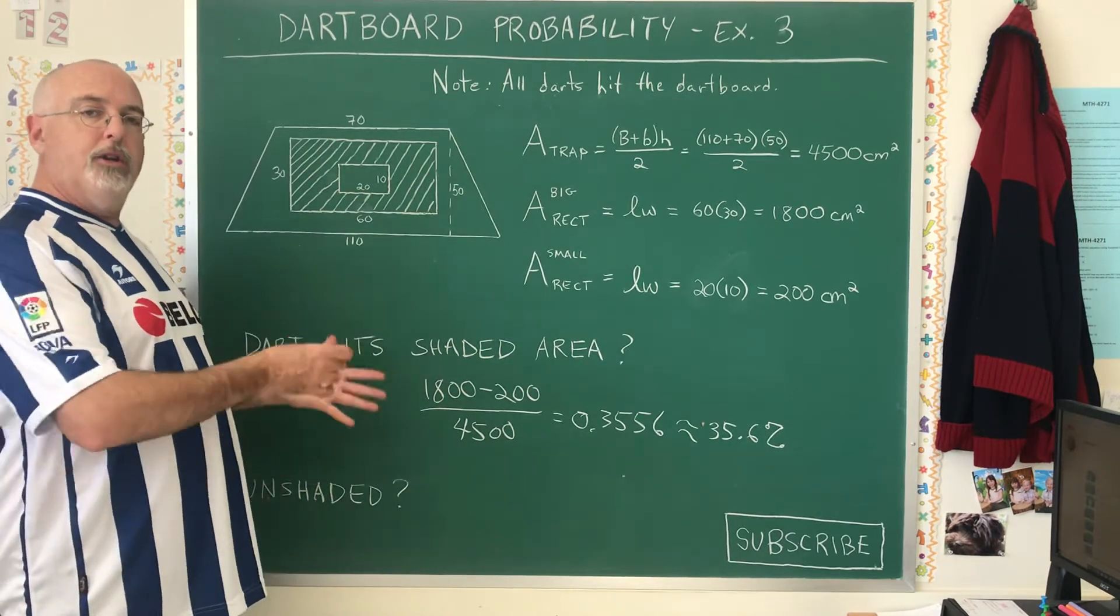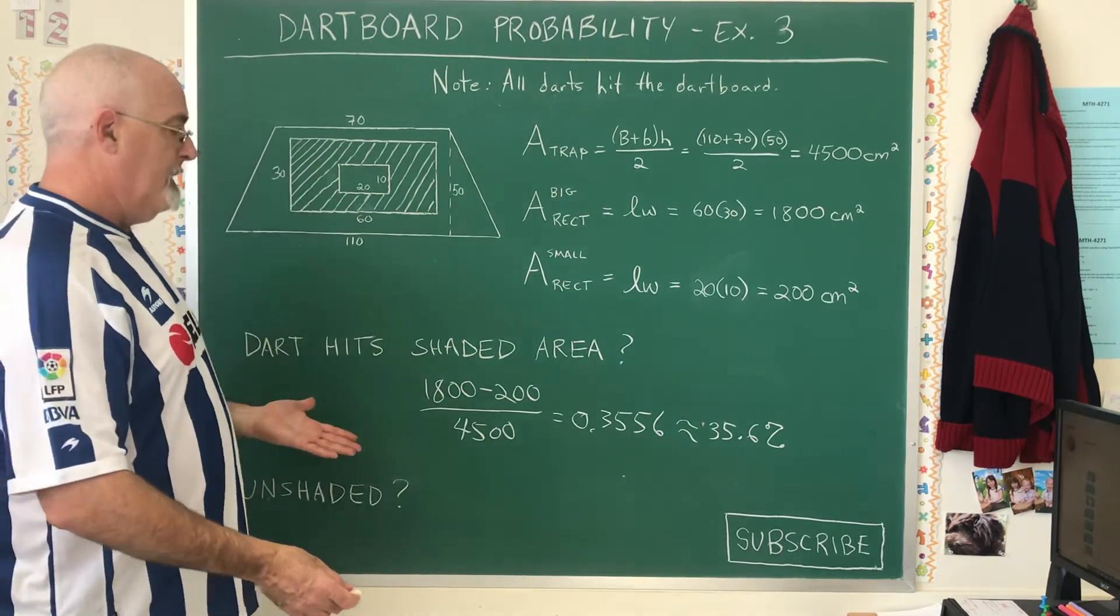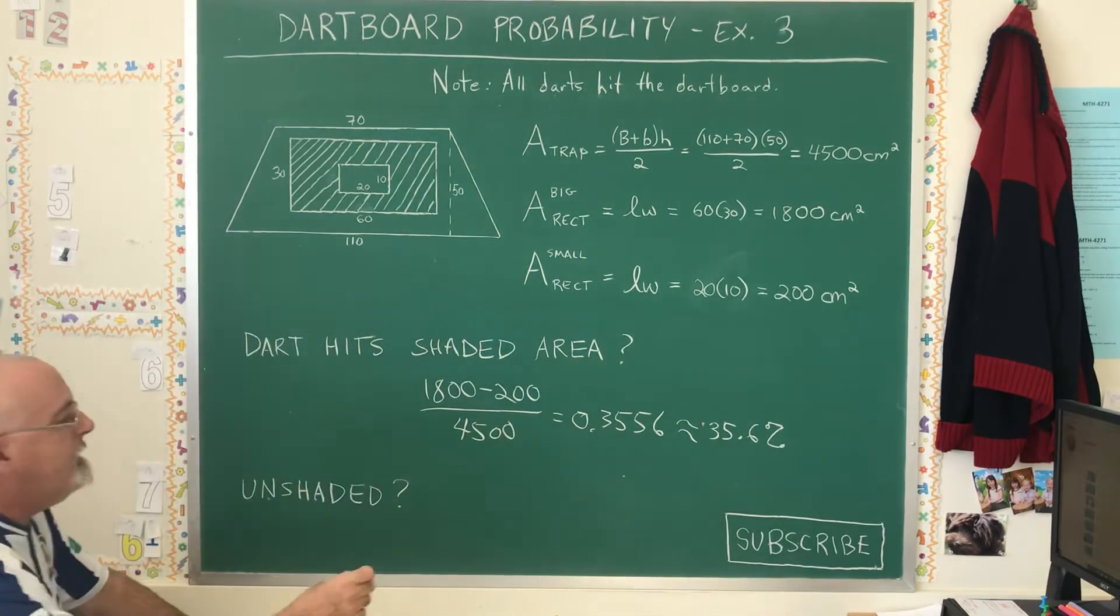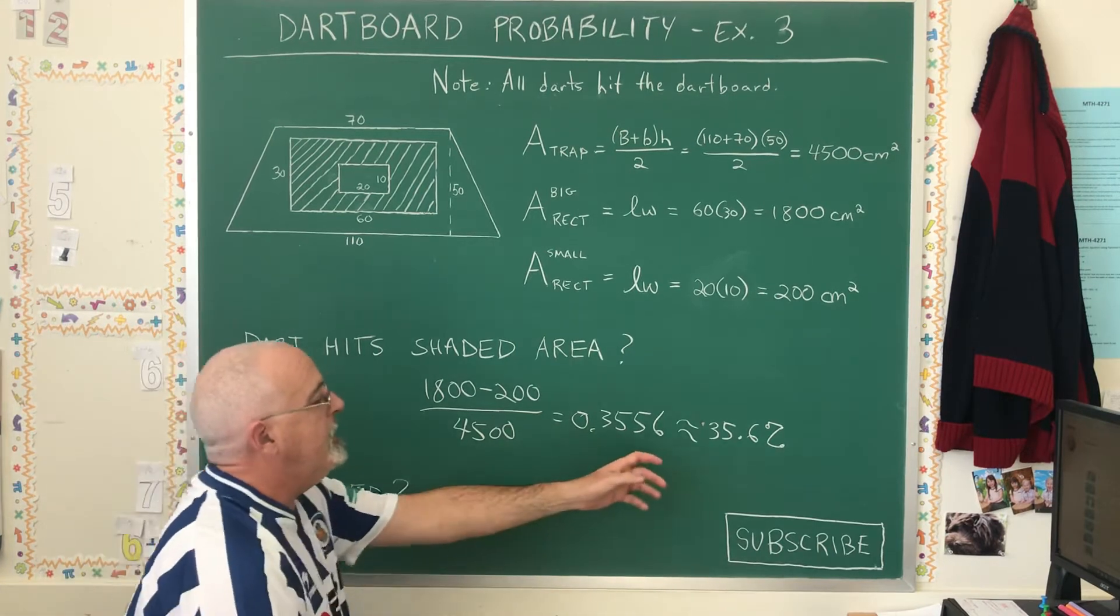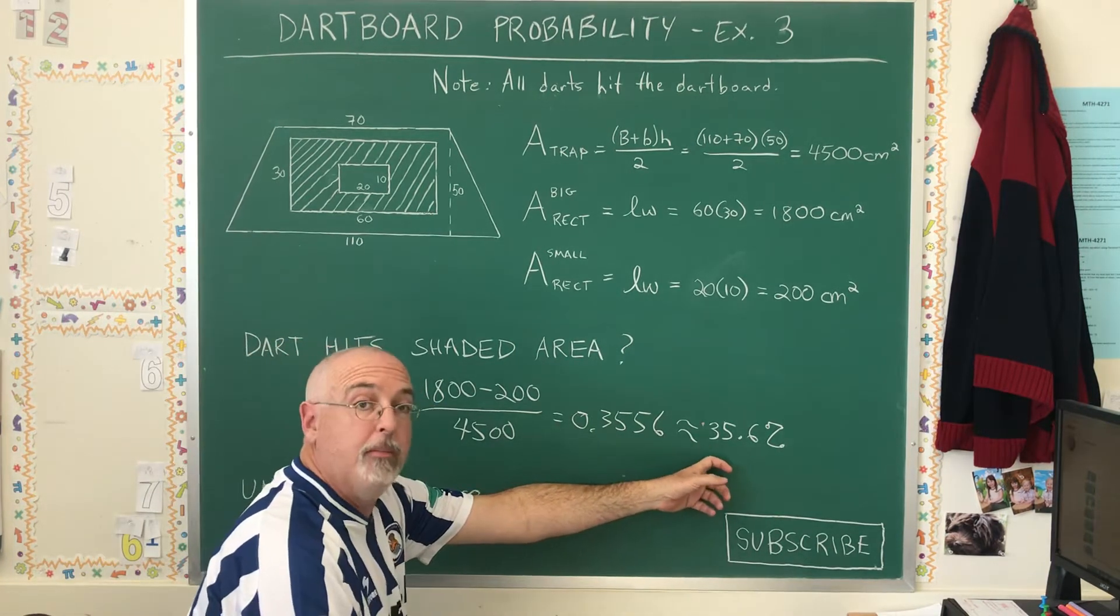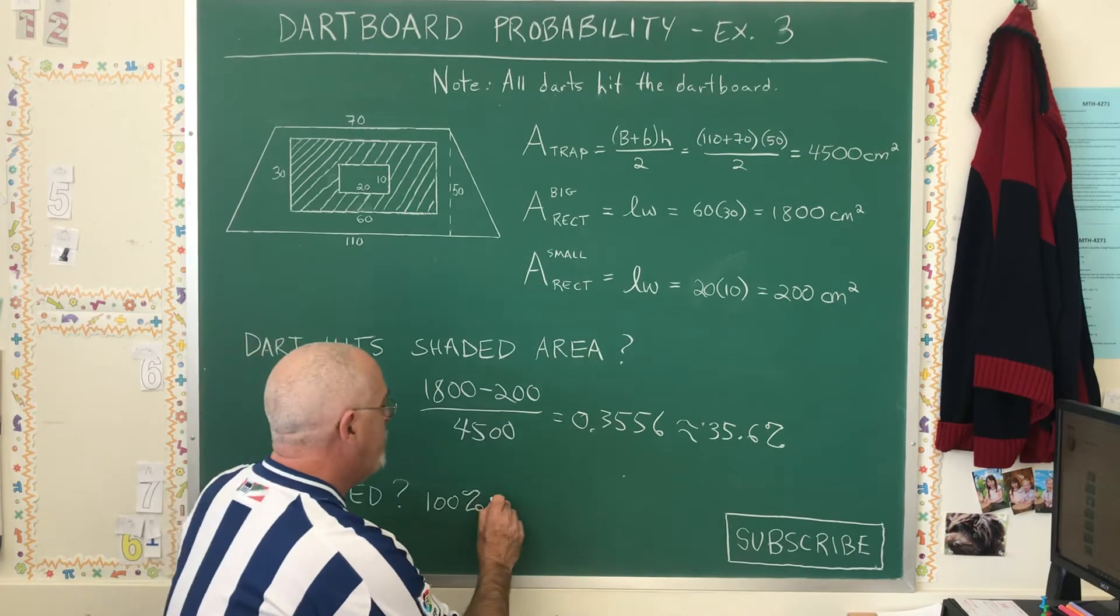And therefore the probability of hitting the unshaded region is 64.4%.